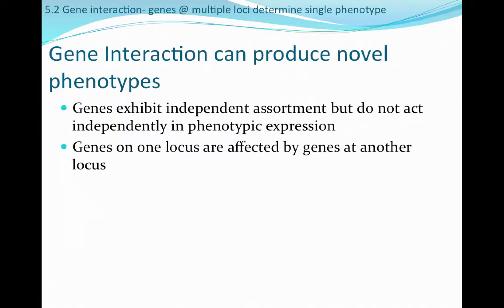Let's first start talking about gene interactions and how they can produce a novel phenotype. Genes can exhibit independent assortment but don't necessarily act independently in phenotypic expression. If there's more than one gene informing a phenotype, they can work together or against each other depending on the trait. The gene at one locus may have an effect on a gene at another locus — working in partnership with it, completely covering it up, or creating some sort of co-dominant situation.